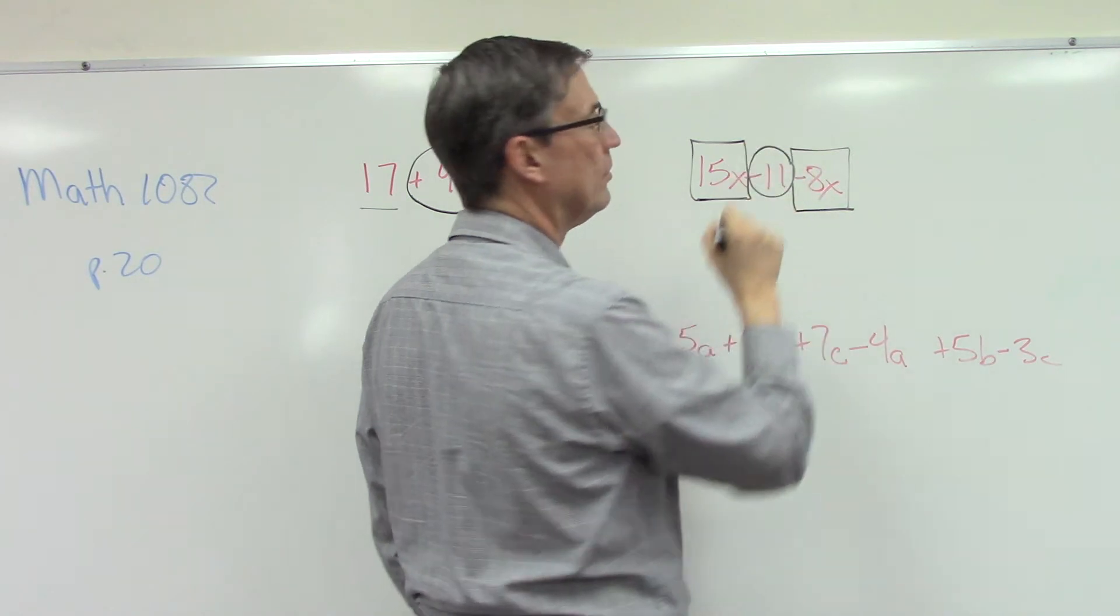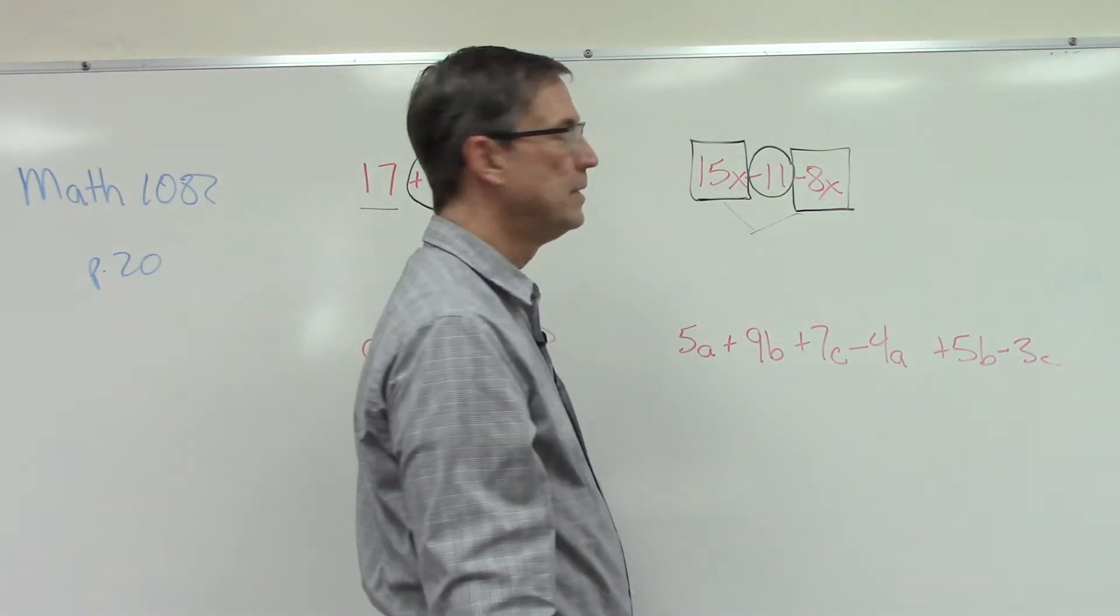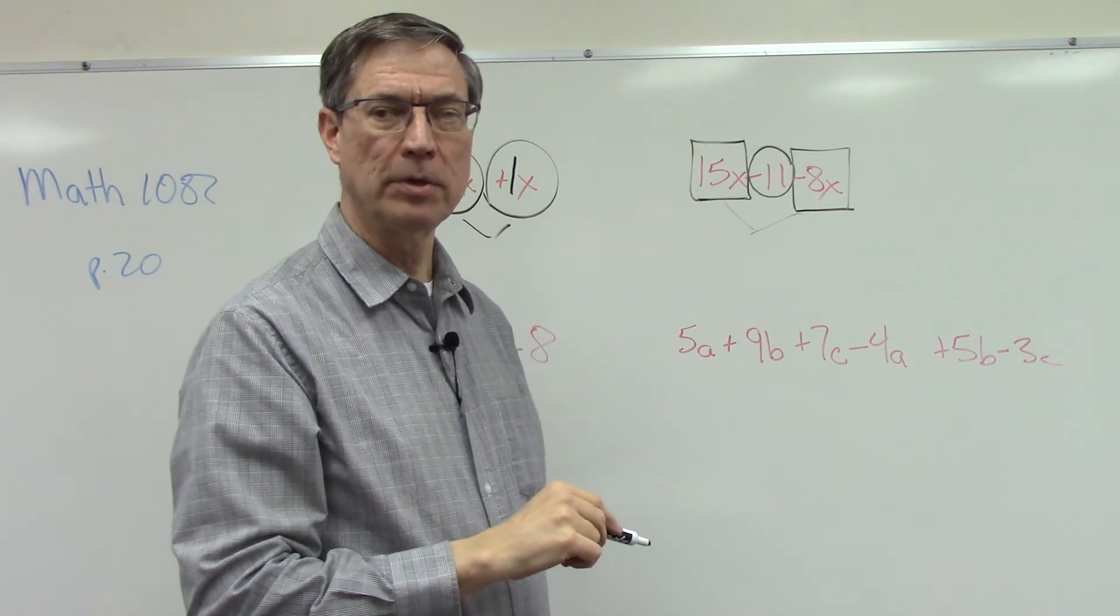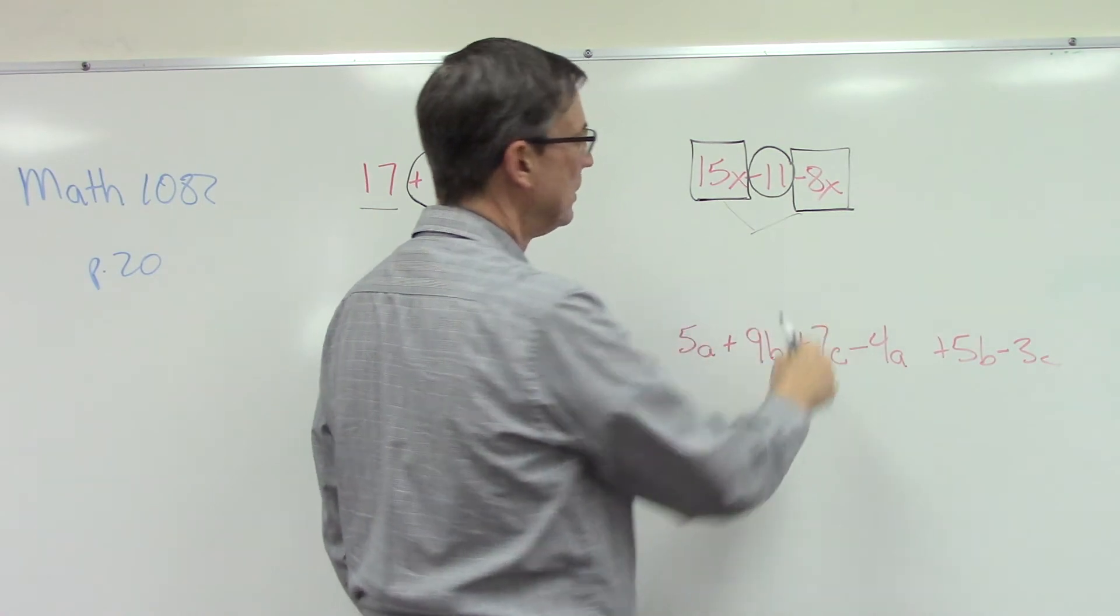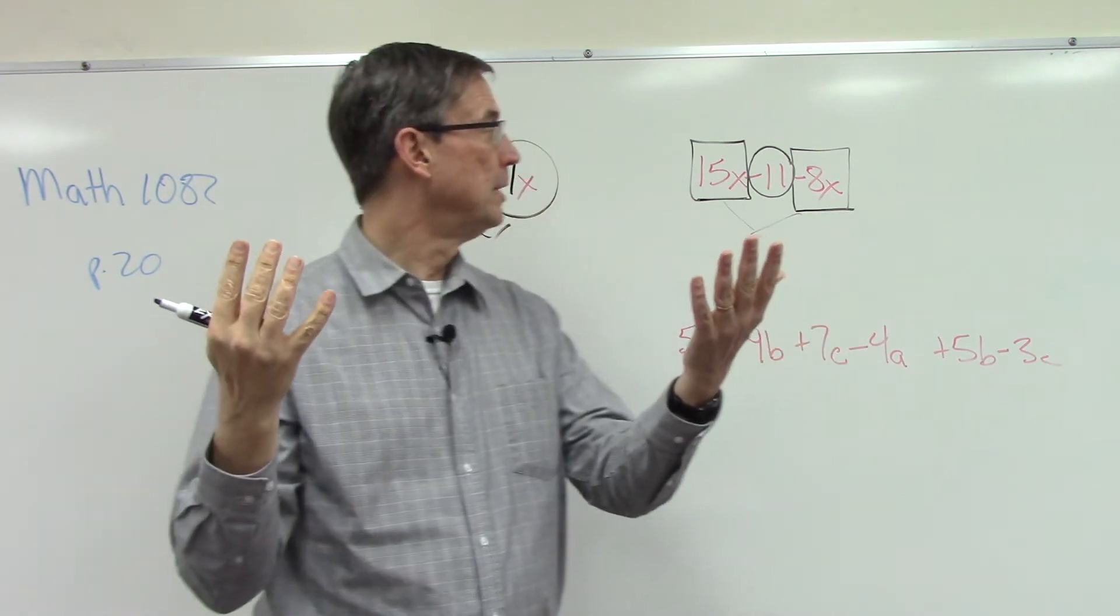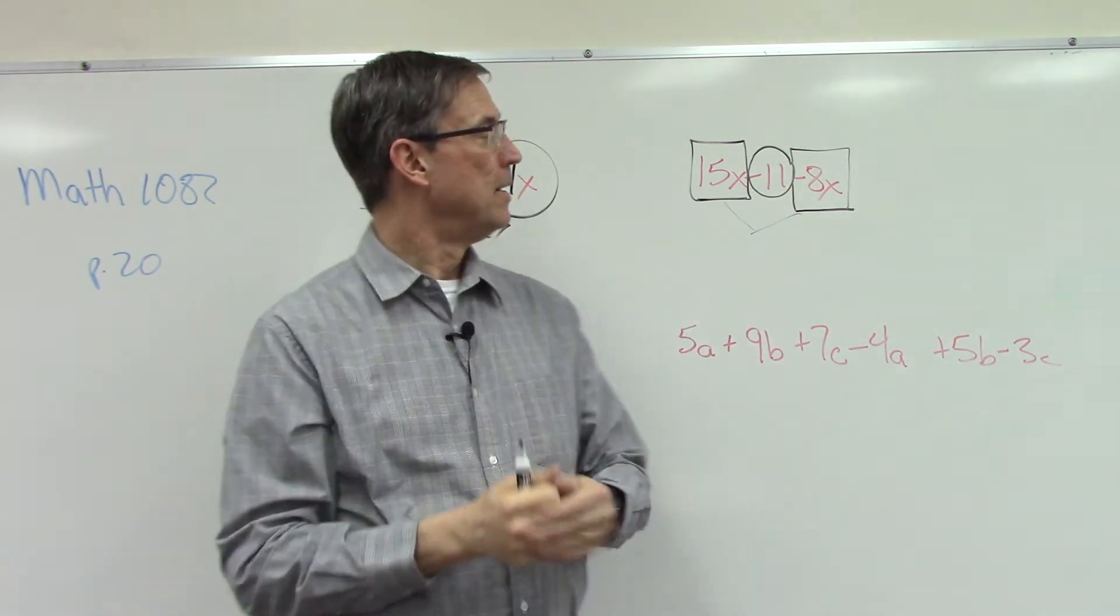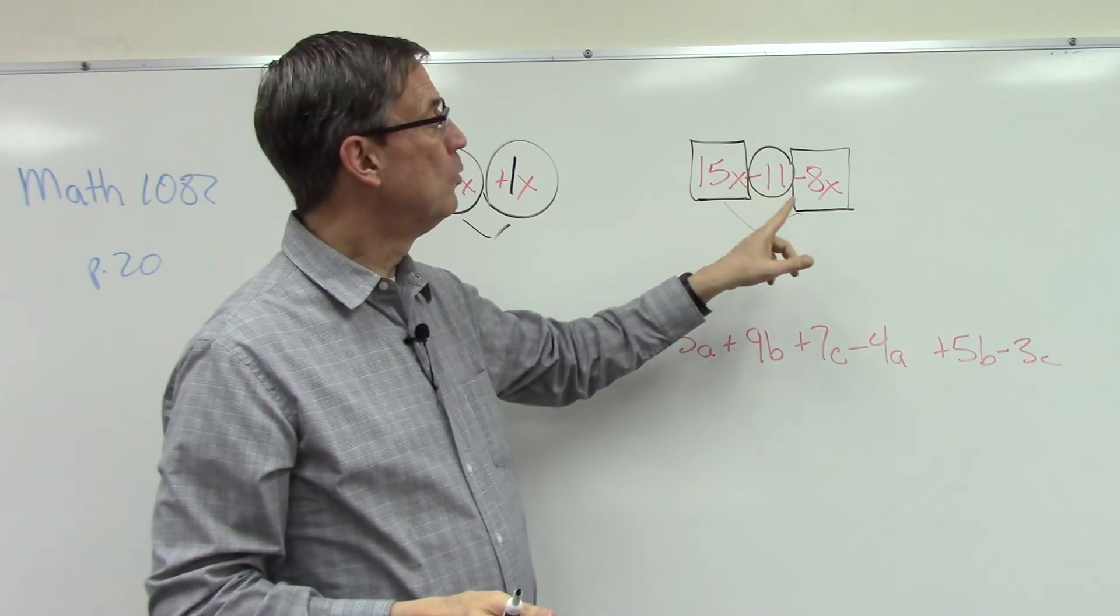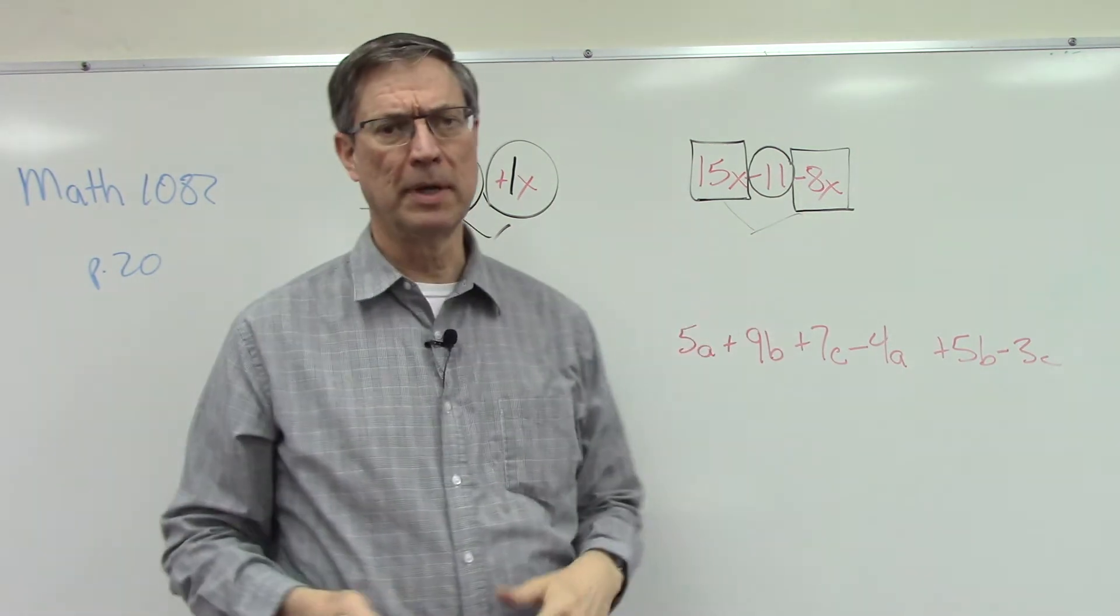But still we're going to be combining 15x and negative 8x. And I'm not going to tell you what that answer is, you can figure that out. Okay, subtract 8 from 15, just keep the x with it, and then bring down the minus 11. Now again, does it matter if you do negative 11 first and then do the x term? No, you can do the x term first or you can do the number first. If you do the negative 11 first, make sure you keep the negative with it though. It wouldn't be wrong if you just had 11 and then tried to write something like minus 7x or whatever.